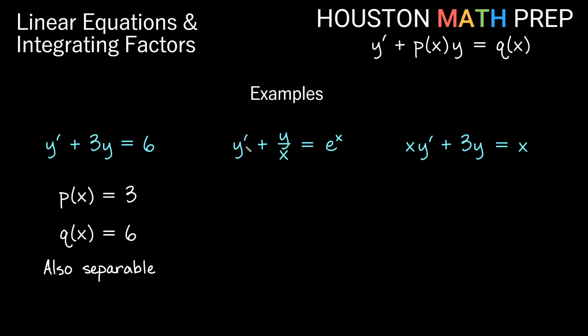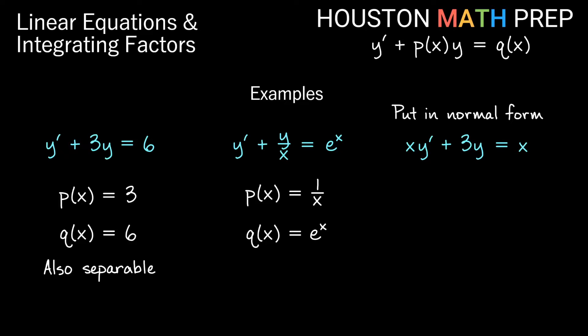Looking at the next one: y' plus y over x equals e^x. Breaking this apart, p(x) is 1/x and q(x) is e^x. For the last one, xy' plus 3y equals x — notice the first term is x times y', but in the normal form we want y' by itself. So we divide everything by x to get normal form: y' plus (3/x)y equals 1, where p(x) is 3/x and q(x) is 1.